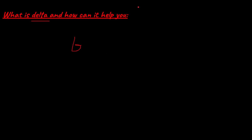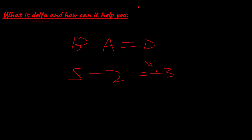So what is delta and how can it help you? Delta is simply bid minus ask. Let's say the bid is 5 minus the ask which is 2 — that is plus 3 delta, meaning there's more buying bias. If it was 5 minus 10, it would be minus 5 delta.